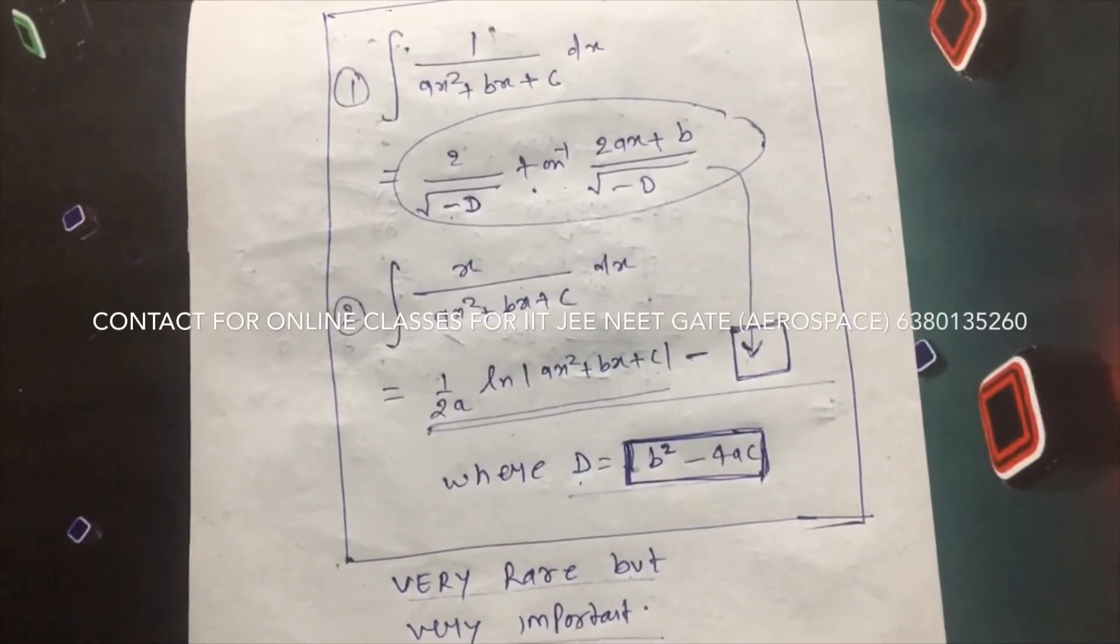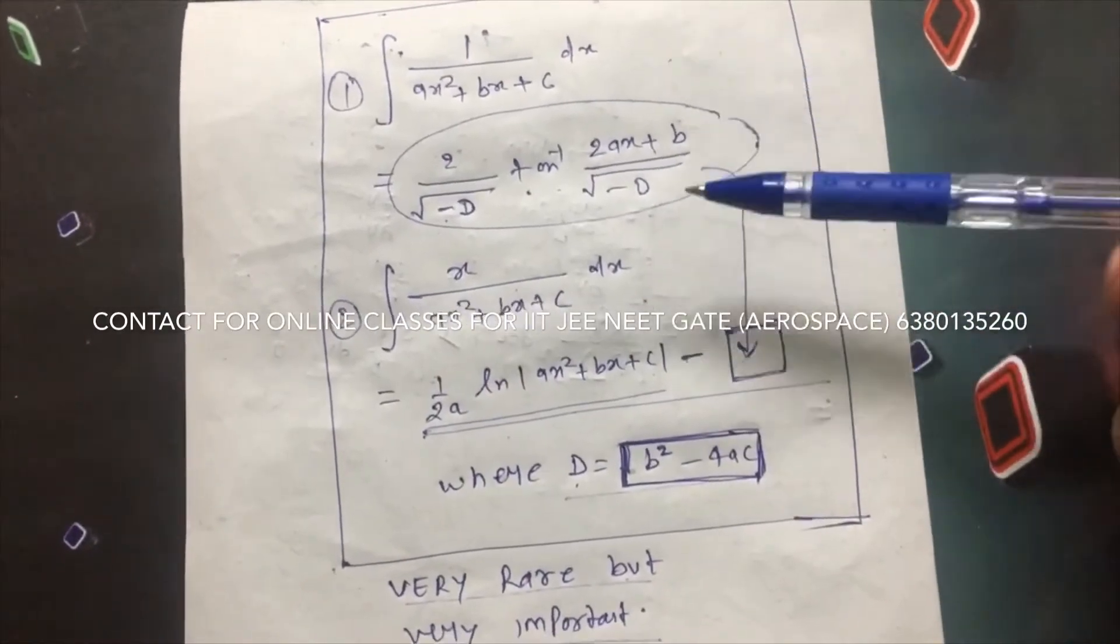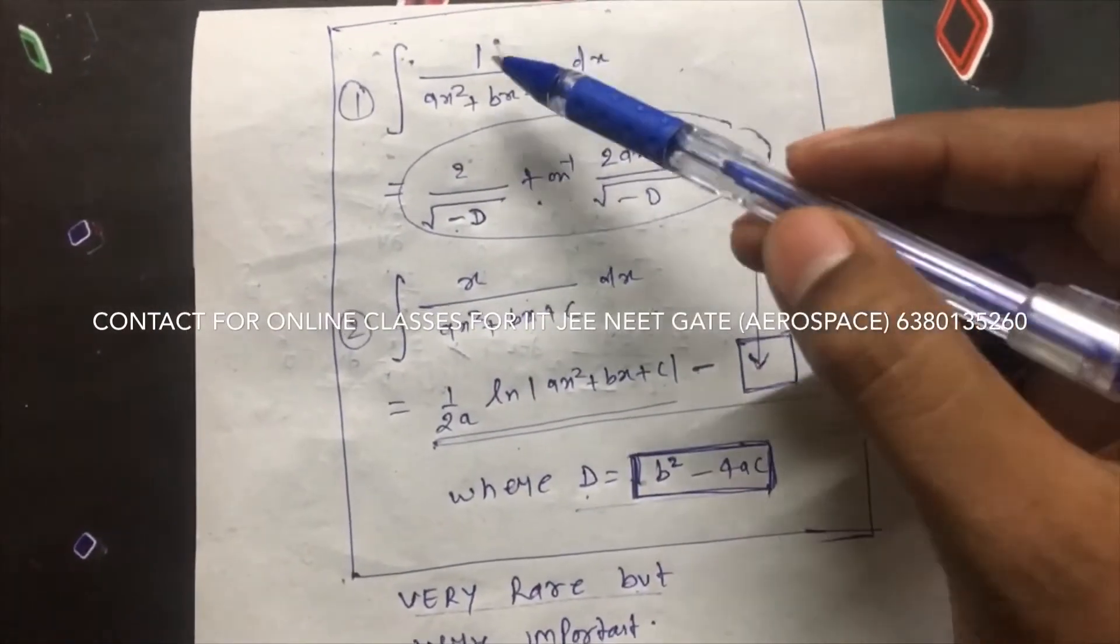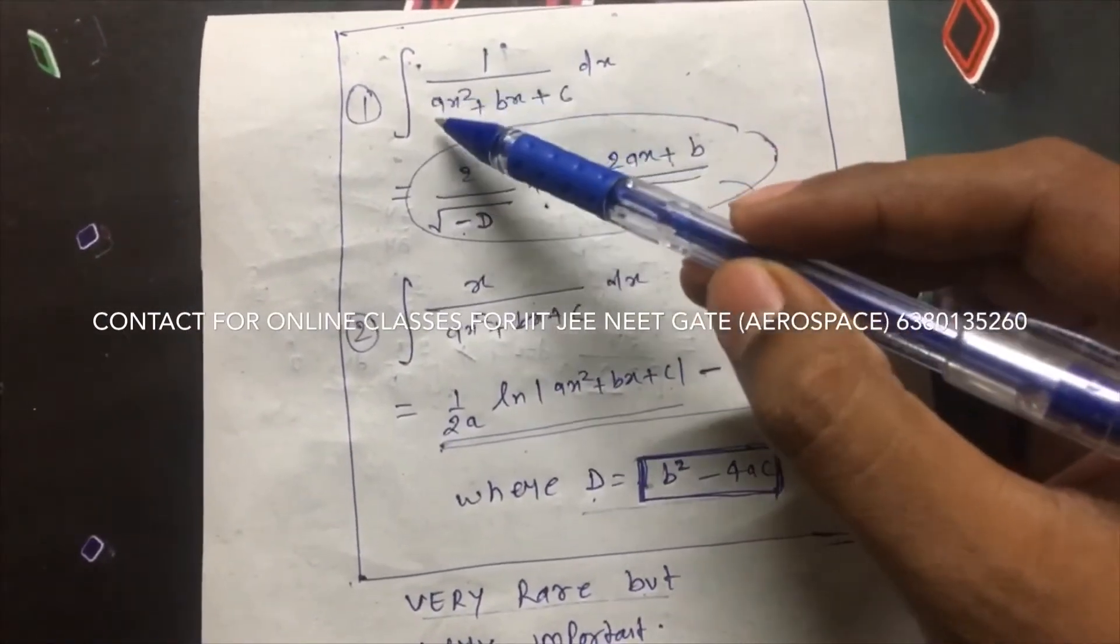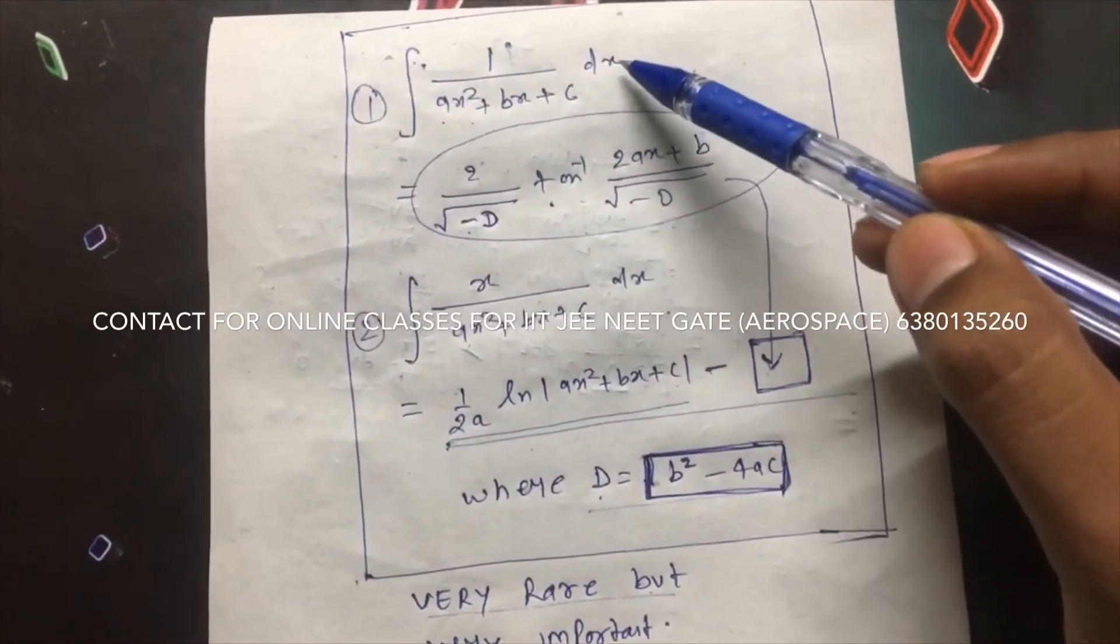Hello everyone, after a long time I am uploading this video. These two formulas are very important. You see, we have 1 by ax square plus bx plus c, and we have to integrate with respect to x.